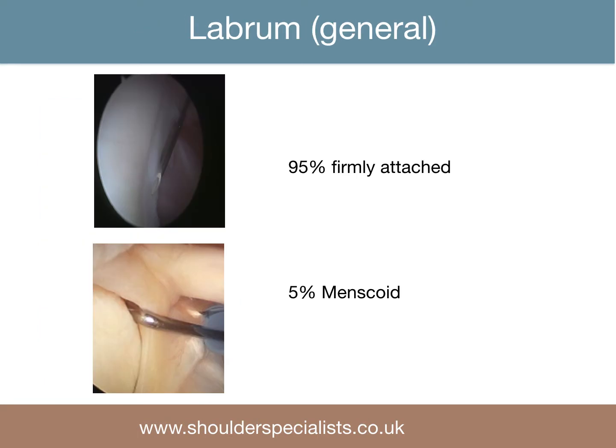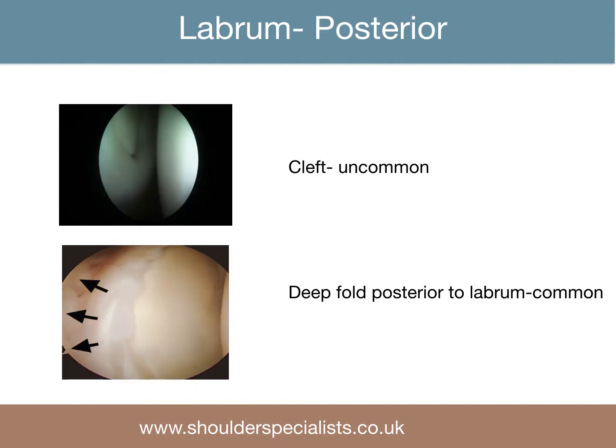The labrum is generally firmly attached in 95% of cases, and meniscoid in 5% of patients. Rarely there is a cleft seen between the glenoid and attachment of the posterior labrum, as seen in this view of the posterior and inferior labrum, but it is common to see a deep capsular fold adjacent to the posterior labrum.